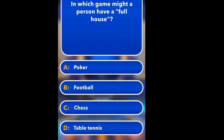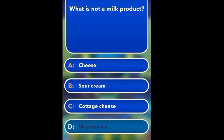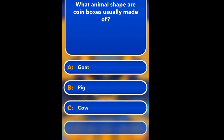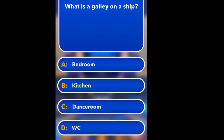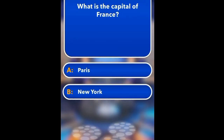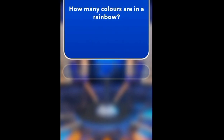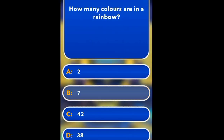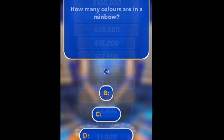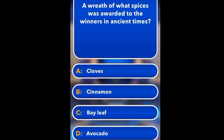What is the name of the statue of Jesus Christ? Christ the Redeemer in Rio de Janeiro. What tree do acorns come from? Chestnut, Ash, Hawk, Maple, Oak. Oak. What is not a milk product? Cheese, sour cream, cottage cheese, mayonnaise. Mayonnaise.